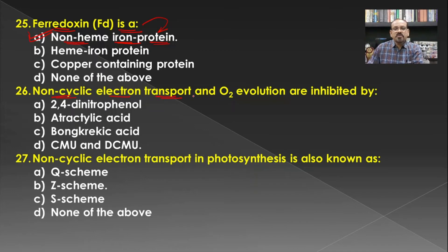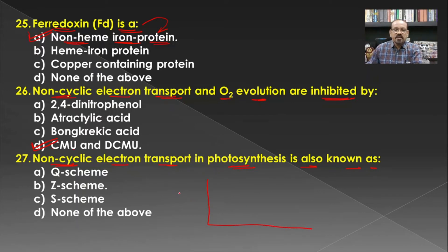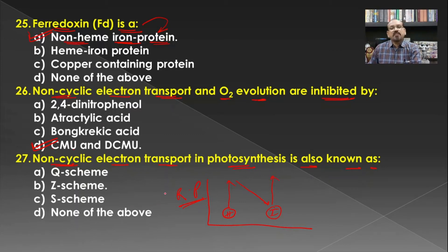Non-cyclic electron transport and O₂ evolution are inhibited by dichloromethyl uridine (DCMU), which acts as an inhibitor of non-cyclic electron transport and oxygen evolution in photosynthesis. The non-cyclic electron transport in photosynthesis is also known as the Z-scheme. Based on the redox potential of non-cyclic photophosphorylation, when PS2 releases electrons they pass to PS1, and after absorption of photons they form a Z-shaped structure. Hence it is known as the Z-scheme.